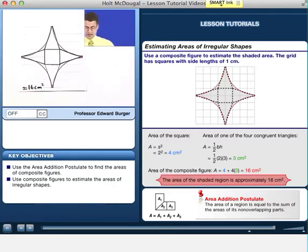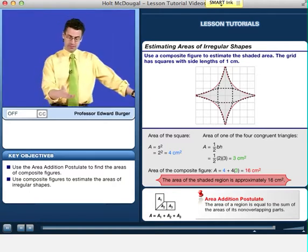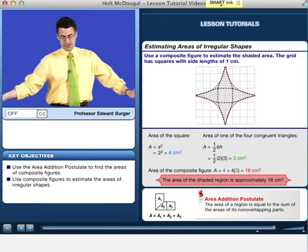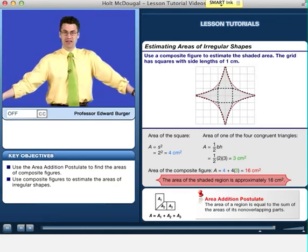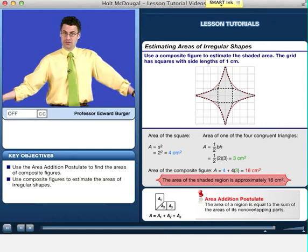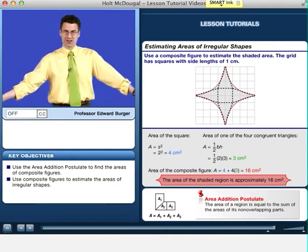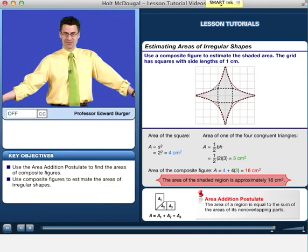So we can give a nice approximation pretty easily by taking a very exotic shape and cutting it up and approximating it by a composite figure where we can actually find the area of each of the little components. Anyway, areas are abound, and sometimes the shapes aren't so straightforward, and yet when we divide and conquer, we see the areas. See you soon.